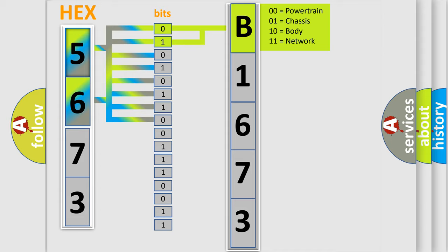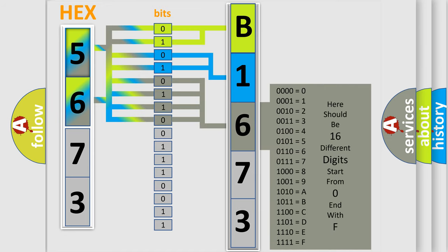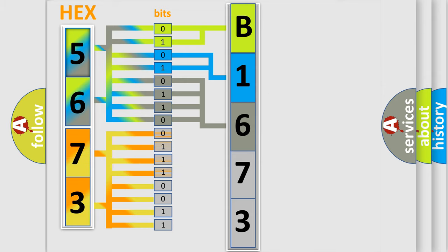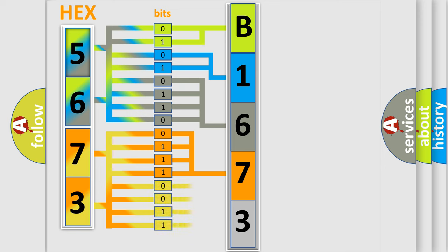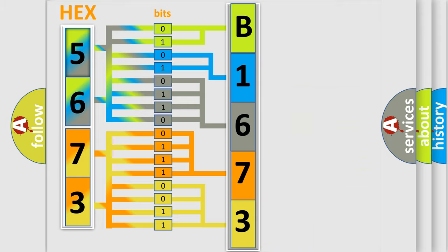By combining the first two bits, the basic character of the error code is expressed. The next two bits determine the second character. The last four bits of the first byte define the third character of the code. The second byte is composed of a combination of eight bits — the first four bits determine the fourth character, and the last four bits define the fifth character. A single byte conceals 256 possible combinations. This is how the diagnostic tool translates the received information into a more comprehensible format.